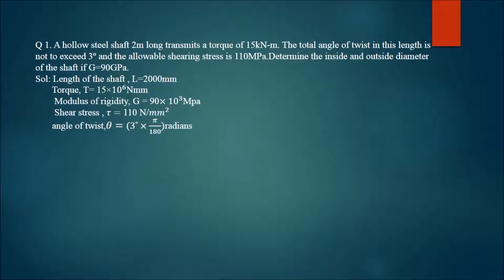So here's the question. There is a hollow steel shaft which is two meters long and transmits a torque of 15 kN·m. The total angle of twist in this length is not to exceed 3 degrees and the allowable shearing stress is 110 MPa.